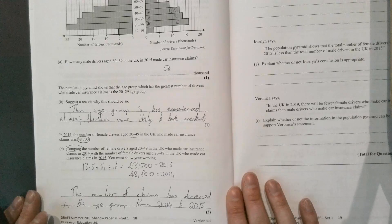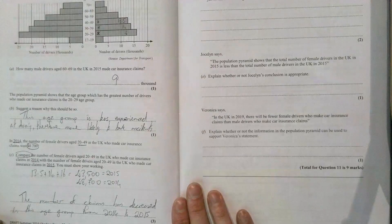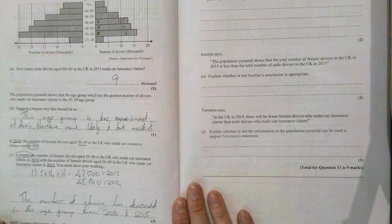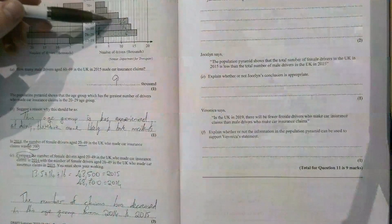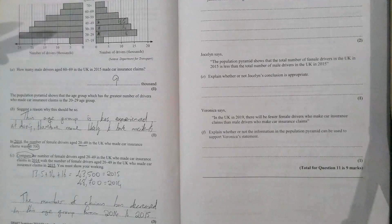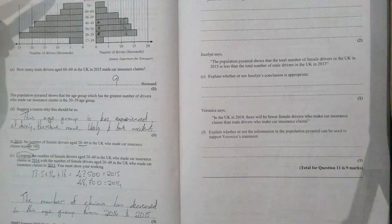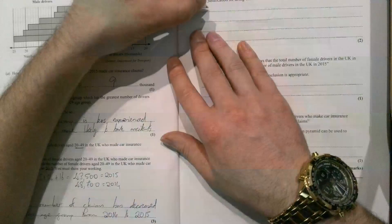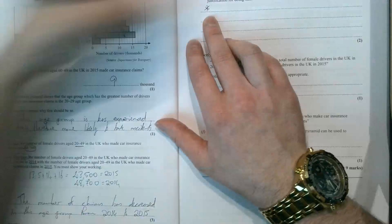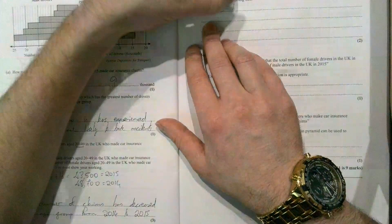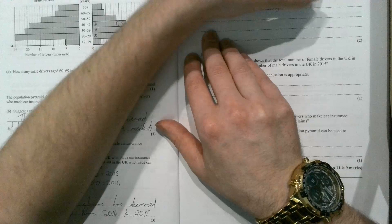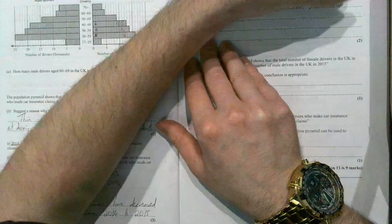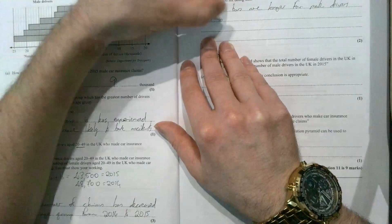Next one. The Viva insurance company charges young male drivers more for car insurance than it charges all other drivers. Explain two features of the population pyramid which Viva might use to justify its decision. So, part A, what we can see here—we need two points, two marks. We could say that the bars are longer for male drivers as opposed to female drivers.